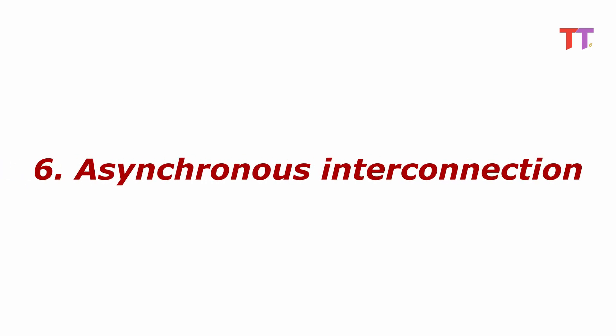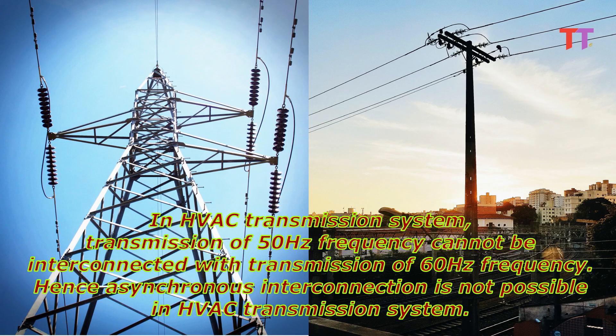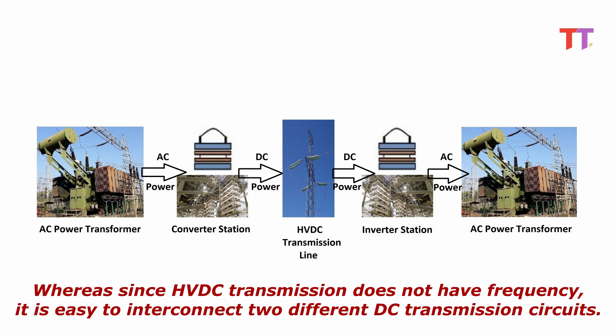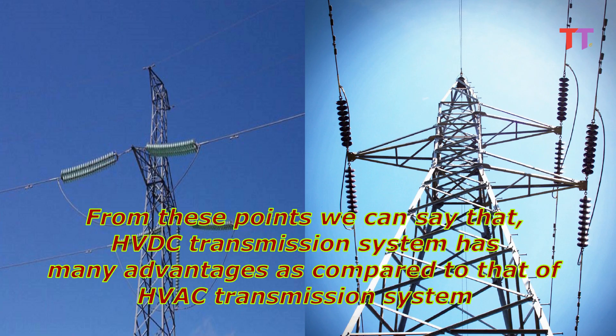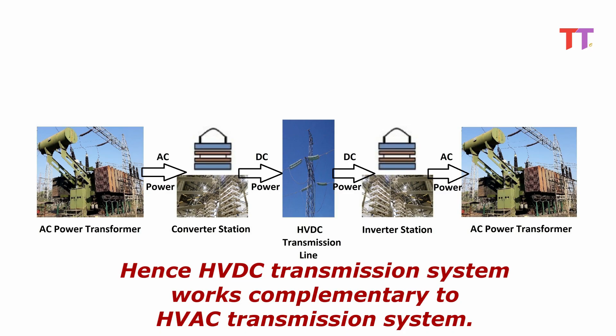Asynchronous interconnection: In HVAC transmission system, transmission at 50 Hz frequency cannot be interconnected with transmission at 60 Hz frequency. Hence asynchronous interconnection is not possible in HVAC. Whereas since HVDC transmission does not have frequency, it is easy to interconnect two different DC transmission circuits. From these points we can say that HVDC transmission system has many advantages compared to HVAC, and hence HVDC transmission system works complementary to HVAC transmission system.